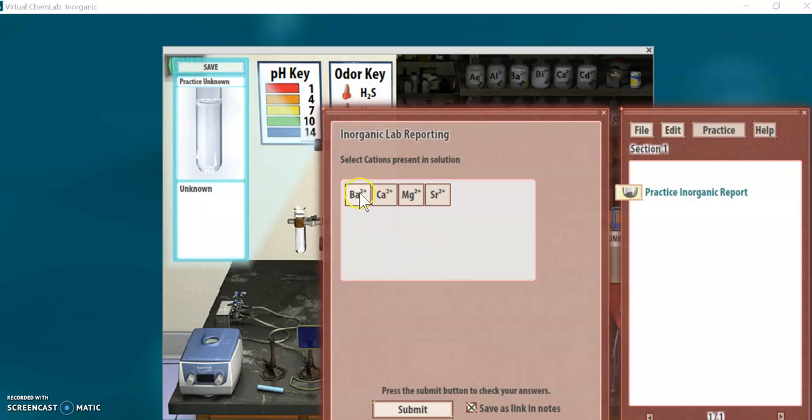Select the ions that you think are present in your unknown and click submit. I'm going to select all four ions, just to see what happens. I don't actually know what's in there. I'm going to hit submit. Ah, and see, it tells us what we got wrong and right.